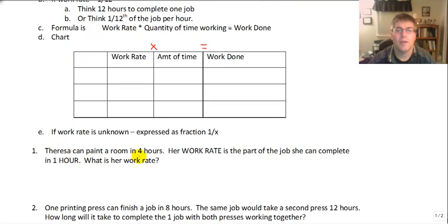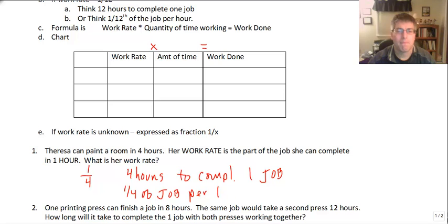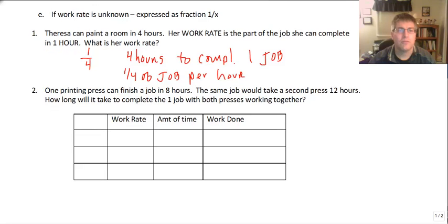Teresa can paint a room in four hours. Since her work rate is part of the job she can complete in one hour, what is her work rate? Well, her work rate is one fourth. So we can look at this as four hours to complete one job, or we can look at this as she completes one fourth of the job per hour. Either way, that's how we can talk about this fraction one fourth.